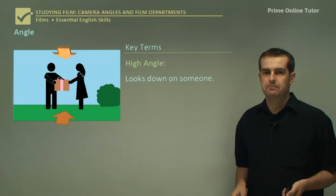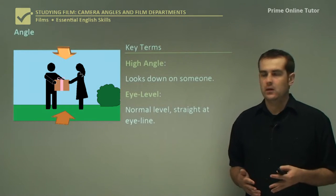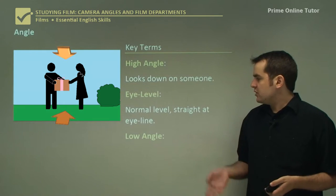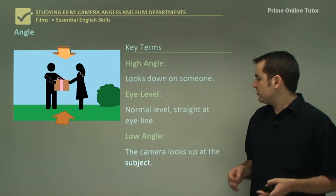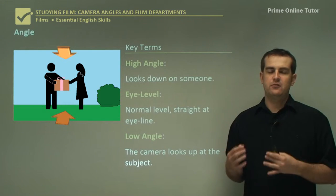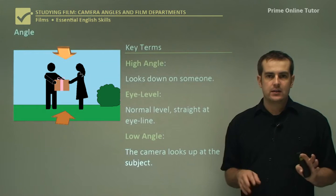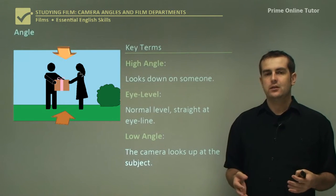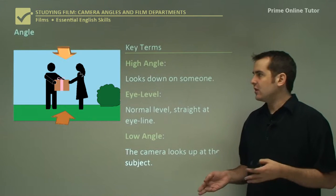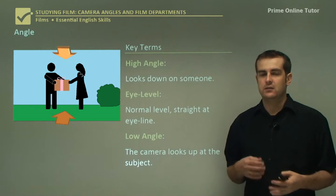Eye level is pretty much what we see already — a normal shot straight at the eye line. A low angle shot looks up at the subject and makes them appear more powerful. So instead of being the kings on the throne, we are the ones at the bottom being looked down upon. When you look up at someone you feel intimidated, but if you look down on someone you feel powerful — camera angles tap into that emotion of feeling either vulnerable or strong.